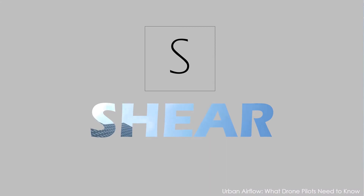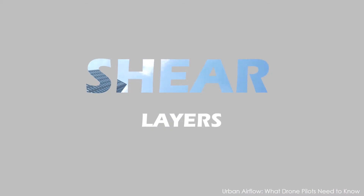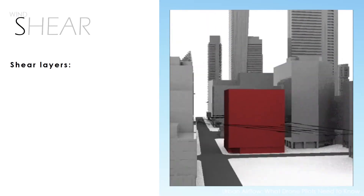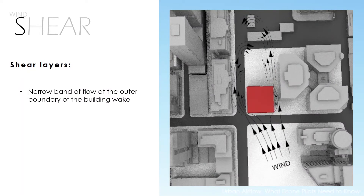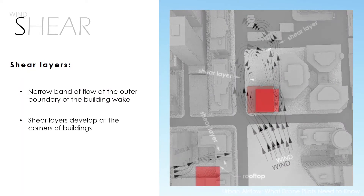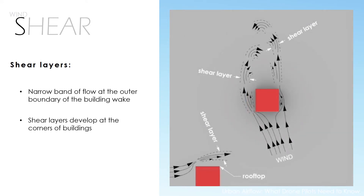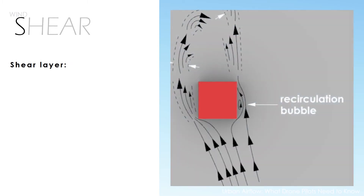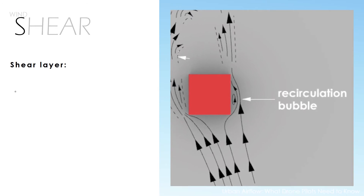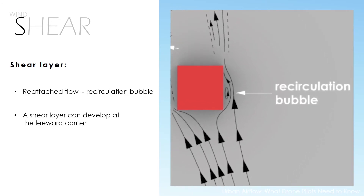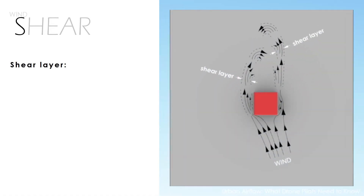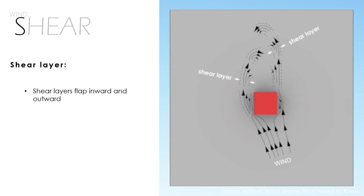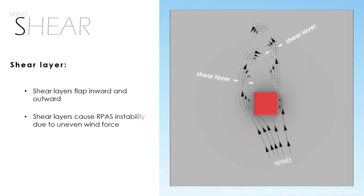Near building corners, wind speed changes rapidly. This airflow feature is known as a shear layer. A shear layer is a narrow band of flow at the outer boundary of a building wake, where the outer side of the band is equal to unobstructed wind speed and the flow on the inner side is slowed by the presence of the buildings and is drawn into the highly turbulent recirculating flow. Shear flow will develop at the windward corners of the building including the roof. If the airflow has enough building length to reattach and form a recirculation bubble, a shear layer may also develop at the leeward corners. Shear layers are not a fixed feature — they flap inward and outward as the wake shifts in time. Passing through a shear layer may cause RPAS instability due to a shifting and uneven distribution of wind force across the aircraft.